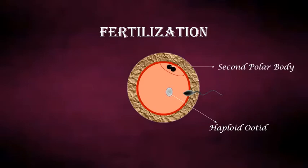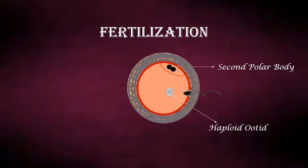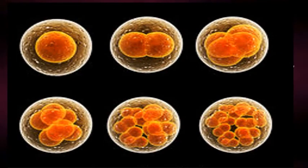Entry of the sperm also changes the zona pellucida, making it harder and impenetrable for other sperms, so that after entry of one sperm a second one cannot enter — if it were to happen, normal development would not occur. Finally, the haploid nucleus of the ovum and the sperm fuse together to form the zygote.